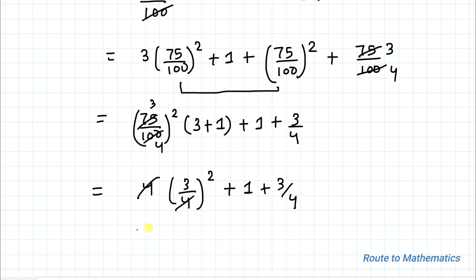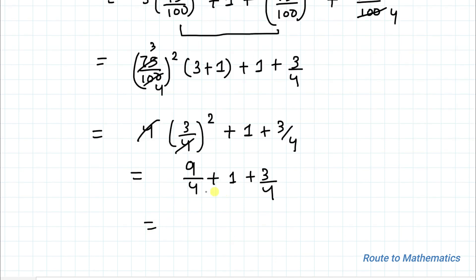So we here we have 4 4 4 get cancelled out. So we have 9 by 4 plus 1 plus 3 by 4. So 9 by 4 plus 3 by 4 is nothing but 12 by 4 plus 1. 12 divided by 4 is nothing but 3. So here we have 3 plus 1 which equals to 4.